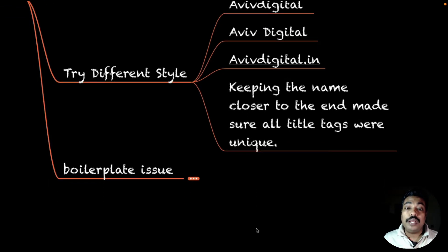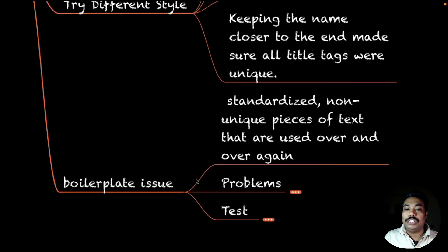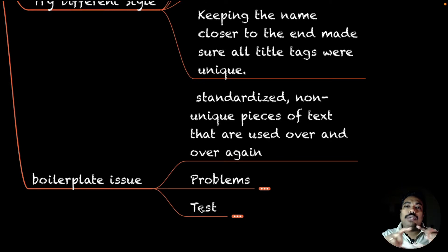Then there is something called boilerplate issue. This is basically from a Moz article - you can check out boilerplate issue Moz article. They did research on this. Boilerplate issue is when we have a website setup with default title patterns. Standardized, non-unique pieces of text are used over and over again. Like in e-commerce, we have categories, subcategories, brand name.